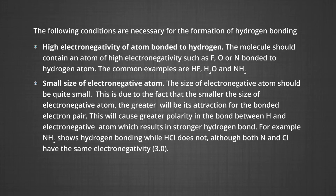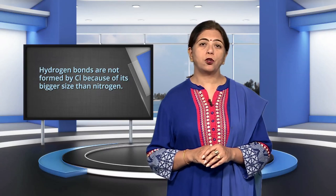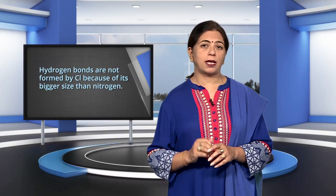The second important factor is the small size of the electronegative atom. The size of the electronegative atom should be quite small. This is because a smaller electronegative atom has a greater attraction for the bonded electron pair, causing greater polarity in the H—X bond and resulting in a stronger hydrogen bond. For example, ammonia shows hydrogen bonding while hydrogen chloride does not, although both nitrogen and chlorine have the same electronegativity of 3.0. Hydrogen bonds are not formed by Cl because of its bigger size compared to nitrogen.